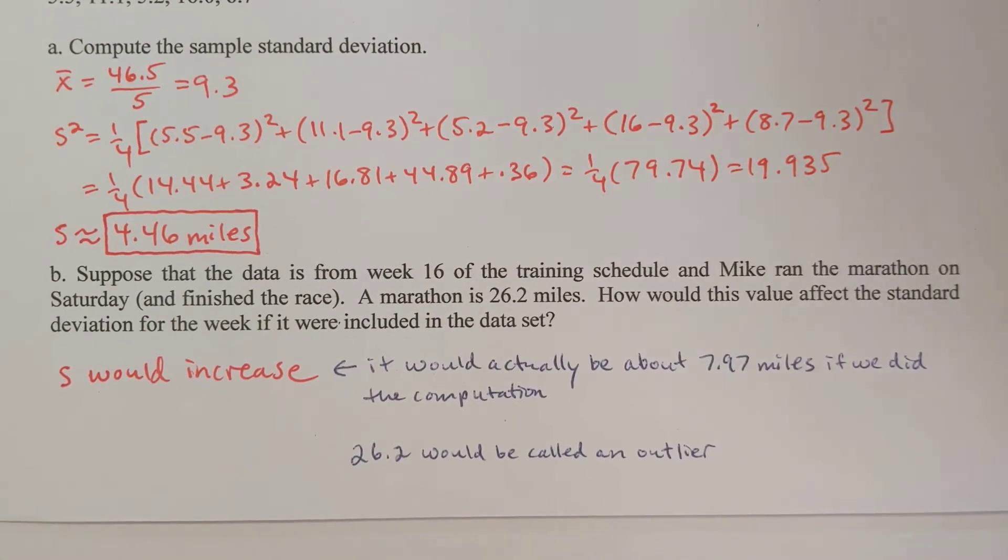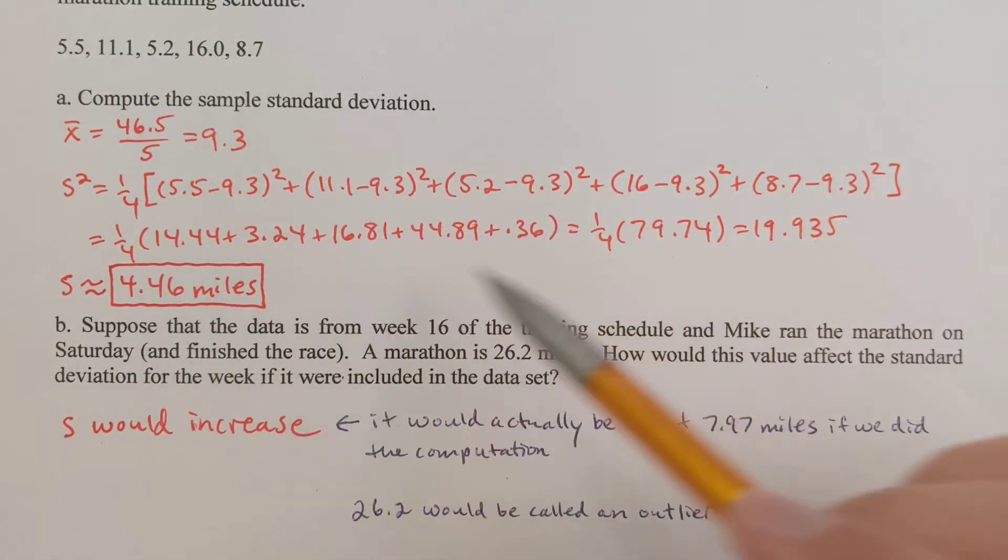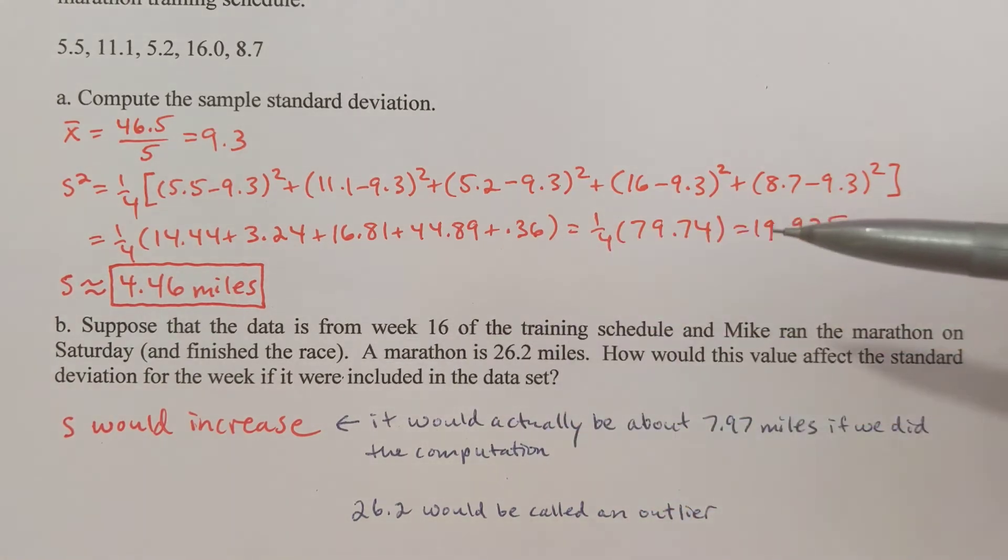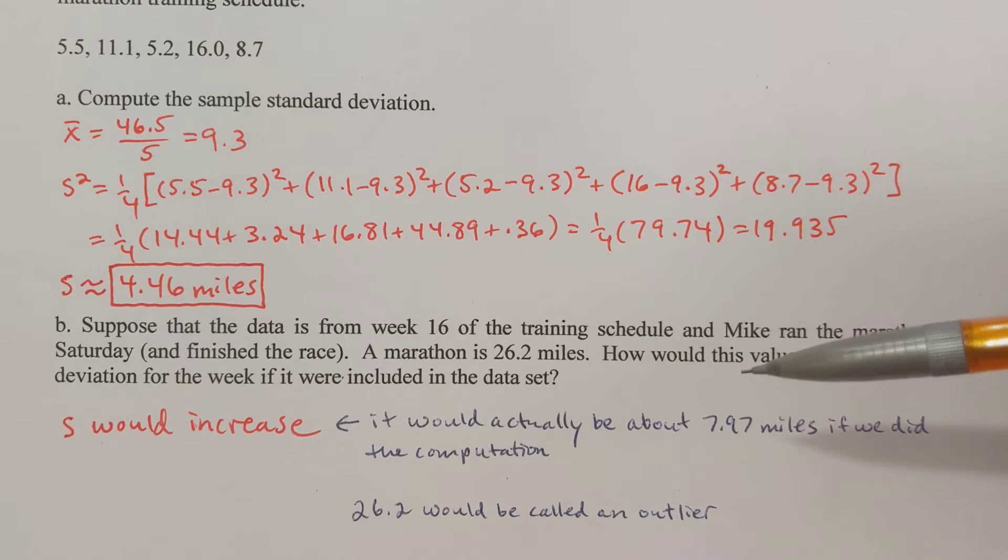Part B: suppose that the data is from week 16 of the training schedule, and Mike ran the marathon on Saturday and finished the race. The marathon is 26.2 miles. How would this value affect the standard deviation for the week if it were included in the data set? It would increase. If I were to add 26.2 to these five numbers and then do the whole calculation again for the standard deviation, S would increase, which shouldn't be surprising because I added a bigger value in the data set, and so S is going to be a bigger value. It would actually be 7.97 roughly miles if we did the computation.